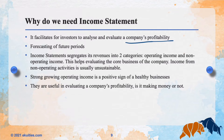In the income statement you will always find two parts: operating income and non-operating income. Operating income is simply income generated from the company's core business. Non-operating income comes from other sources of income, like interest income or sales of securities — but this is not the core of the business. Strong, growing operating income is a positive sign of a healthy business.